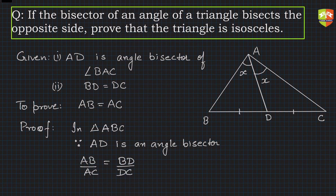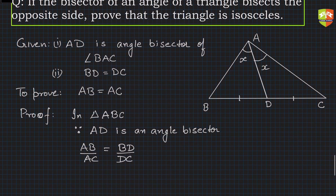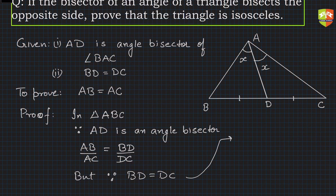But since BD is equal to DC, therefore AB by AC will become one. Why? Because BD and DC are same, so BD by DC will become one. BD by DC is one, so AB by AC is one.